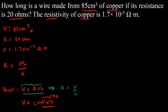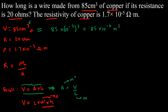Area should be expressed in meters squared and length should be in meters. However, our volume is given in centimeters cubed, so we have to convert it. That's 85, and centimeters means times 10 to the power of negative 2, and we have the cube — so multiply the exponent by 3 — meaning 85 centimeters cubed equals 85 times 10 to the power of negative 6 meters cubed.